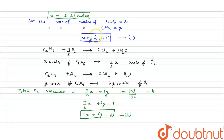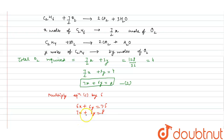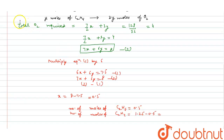We now have two equations: equation 1 is x + y = 1.25, and equation 2 is 7x + 6y = 8. Multiplying equation 1 by 6 gives 6x + 6y = 7.5. Subtracting this from equation 2: (7x + 6y) − (6x + 6y) = 8 − 7.5, which gives x = 0.5. So the number of moles of C2H6 is 0.5.